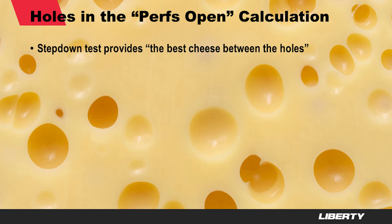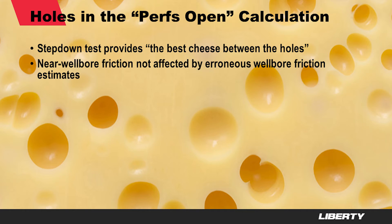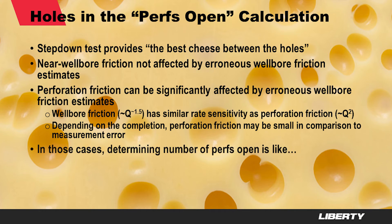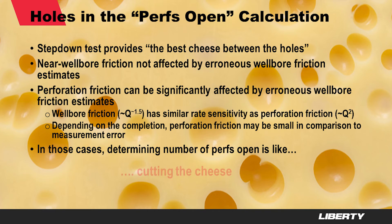In summary, the step-down test provides the best insight between the data points. It's a great test, but it also has some shortcomings that you need to be aware of when you do it. Near-wellbore friction is typically not very much affected by erroneous wellbore friction estimates, but perforation friction is, because wellbore friction and perforation friction have a very similar relationship to rate changes. So depending on the completion, perforation friction may be small in comparison to the measurement error, and in those particular cases determining how many perforations are open is much like cutting the cheese — simply not something that you want to do in a data van.